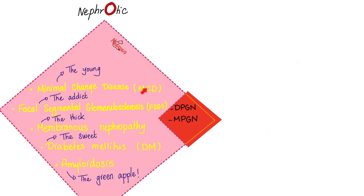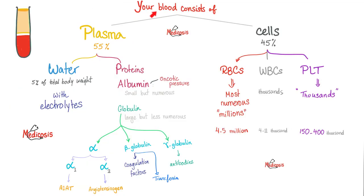Why do we call it 'the young'? Because it affects children mainly. As you know, your blood is made of plasma and cells. The plasma is made of water and proteins — you have small proteins like albumin, and big proteins like globulin. What is the kidney's job? The kidney's job is to filter the plasma — just the water. A normal kidney should not filter proteins; you should not end up with proteins in your urine.